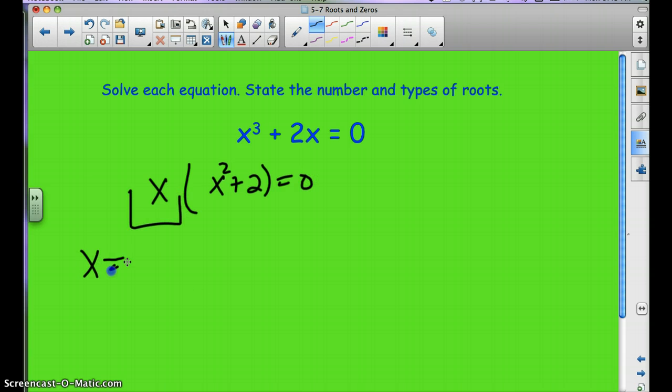Again, we've got to set this equal to 0. And then x squared plus 2 equal to 0. x squared equals negative 2. Square root, square root. x equals plus or minus square root 2i.